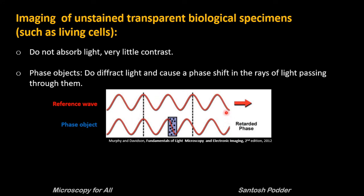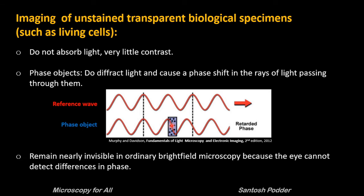When a reference wave passes through a phase object, there is a retardation in phase. But these phase differences in light remain nearly invisible in ordinary bright field microscopy because our eye cannot detect differences in phase.